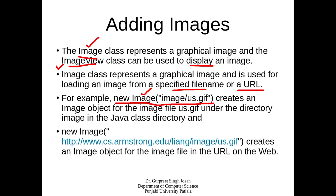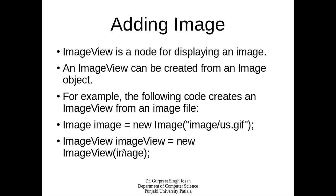This creates an image object for the image file located under the directory 'image' in the Java class directory. Another way is to use the same constructor — new Image — but instead of passing the local file location, you pass the web address where the image is situated. By passing this address you can create the image object, which can then be added to the ImageView.